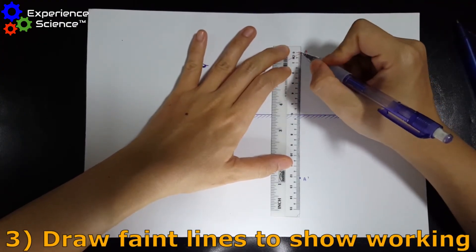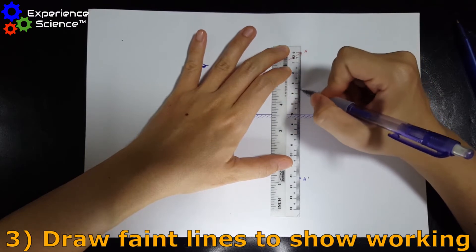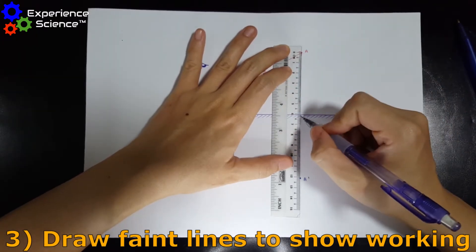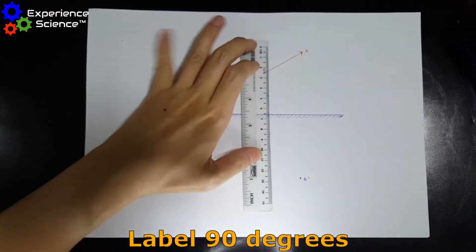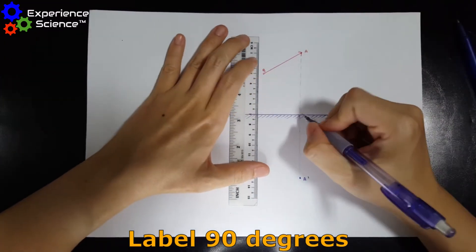So we will do some faint dotted lines to show our working. And then we draw a perpendicular line here.